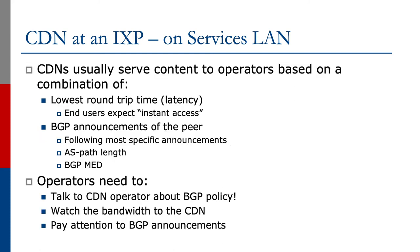CDNs usually serve content to operators based on a combination of lowest round trip time or latency, because end users expect instant access to all content. They also pay attention to BGP announcements of the peer, following more specific announcements in some cases. Sometimes they'll look at AS path length, and quite often the BGP MED. Operators need to talk to the CDN operator about the CDN's actual BGP policy, and also need to watch the bandwidth to the CDN and pay close attention to the BGP announcements they're making globally as well as across the Exchange Point.